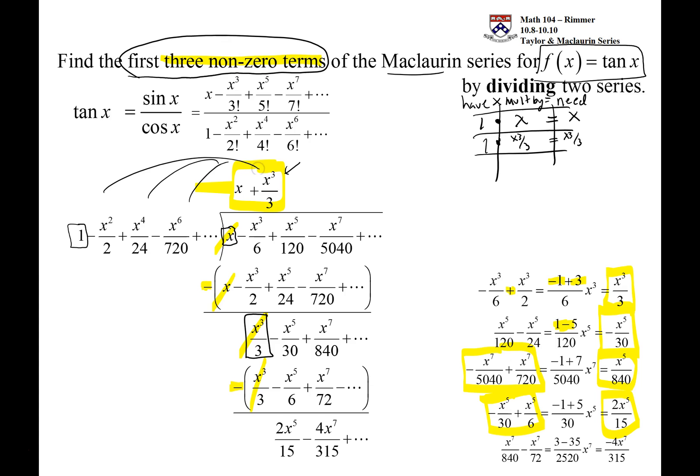To get the third one, we start the process one last time, we don't have to go further than just working the fact that you have a 1, and you need a 2x fifth over 15, so you multiply by 2x fifth over 15, and that's the last part of your quotient. And that's it, so tan x is going to be that. The first 3 non-zero terms is exactly x plus x cubed over 3 plus 2x fifth over 15.